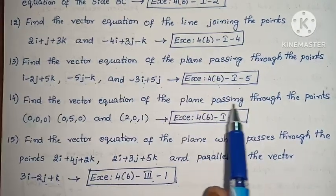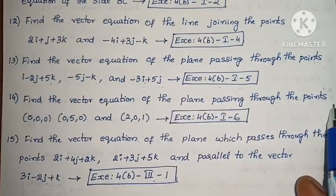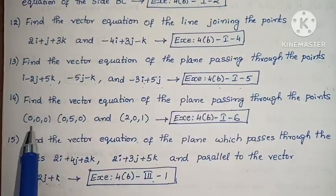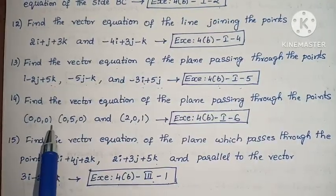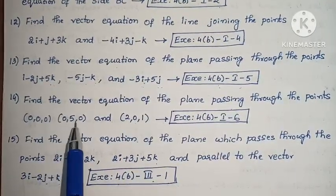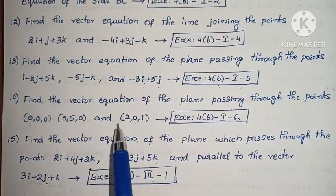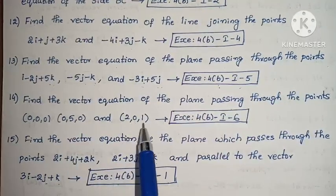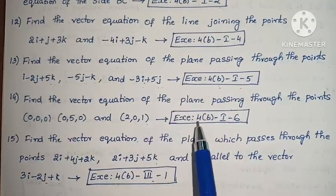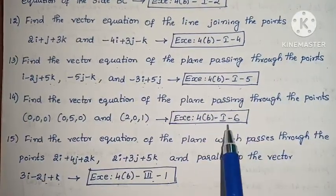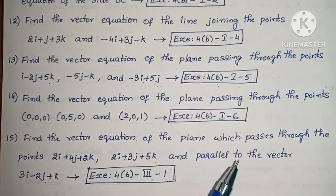Next: Find the vector equation of the plane passing through the points (0, 0, 0), (0, 5, 0) and (2, 0, 1). Exercise 4B, problem 6.